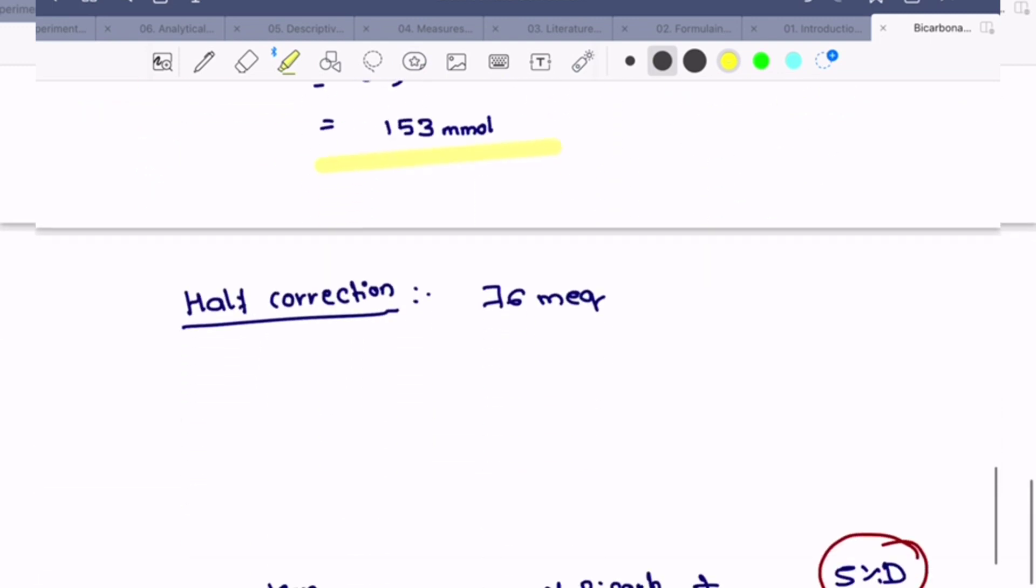Now, how to do half correction? That is 76 milliequivalents - 153 half of it is 76 milliequivalents.